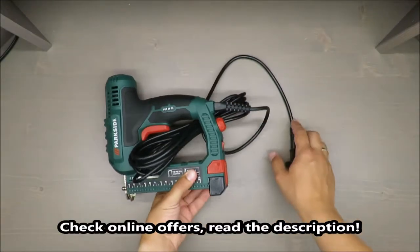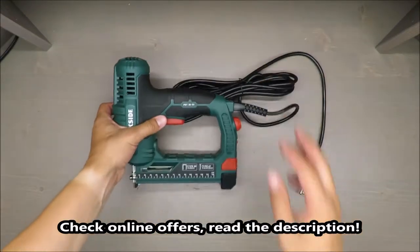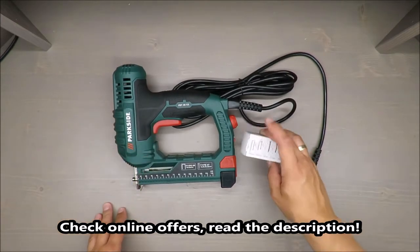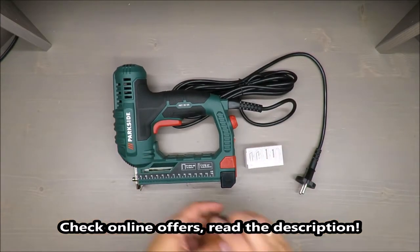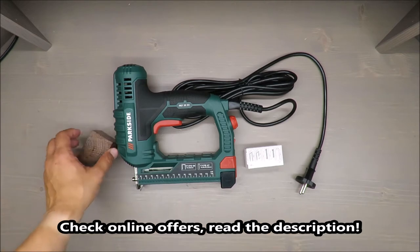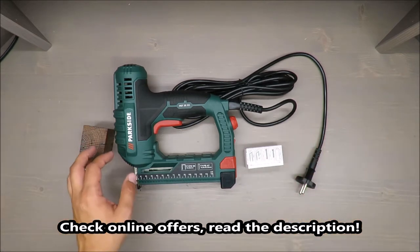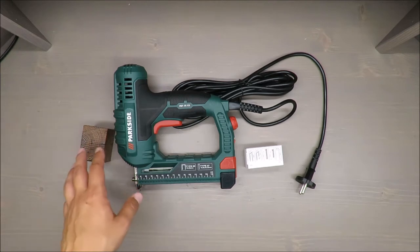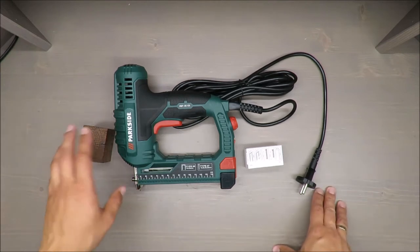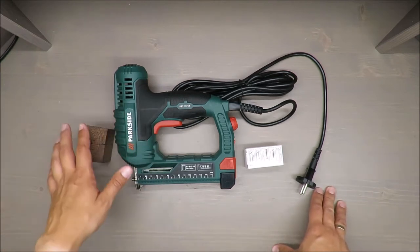Hello everybody, this is Out of the Box unboxing and in today's episode I'm going to review and test this electric nailer stapler, or for me it's like a tucker from Parkside available in Lidl. On the beginning I will share my impression and then we'll move to the testing part.